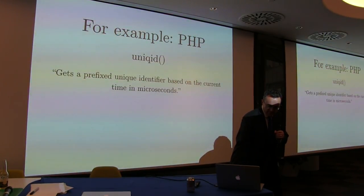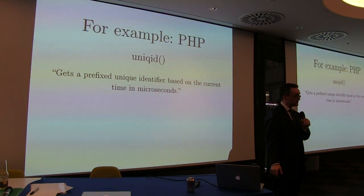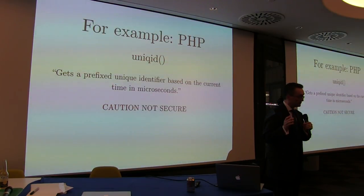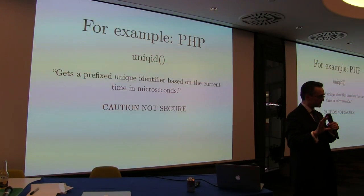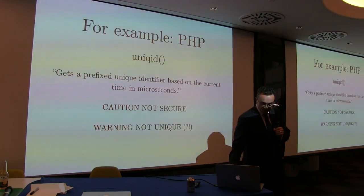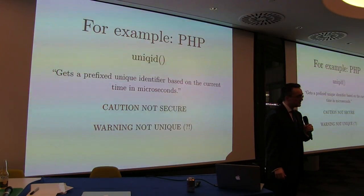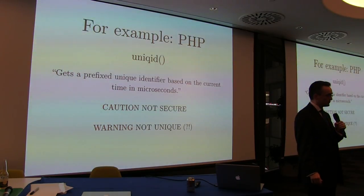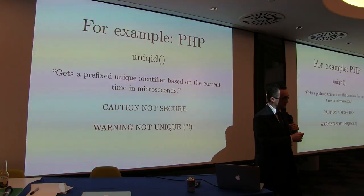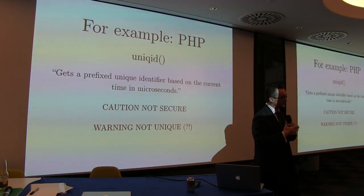To their credit, PHP explains exactly what this does in the documentation — it basically returns the time in microseconds. And again to their credit, they also say: warning, don't ever use this to generate credentials, because that would be terrible. They don't say exactly why, but they do have a big warning. They also say, rather bizarrely, that you cannot use unique_id to generate a unique ID, because you might be running NTP which would apply a negative difference to your time, so it might return the same time twice.